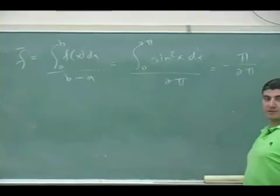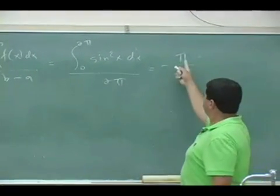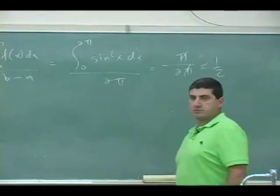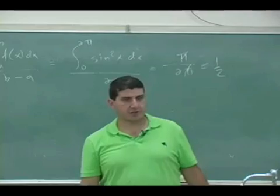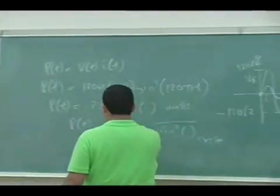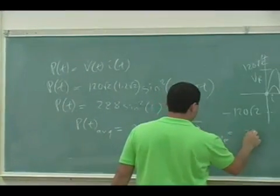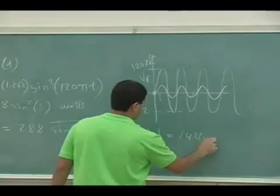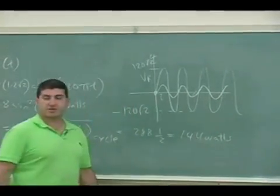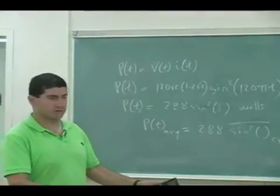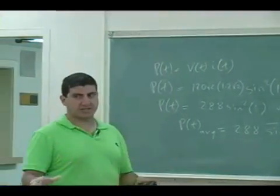So the average of the sine squared function is, the integral is pi, and pi over 2 pi is 1 half. So the average of the sine squared function is 1 half. So that means the power T average is 288 times 1 half, which is 144 watts. That's the average cycle if we're using a common source, and if the resistance is 100.